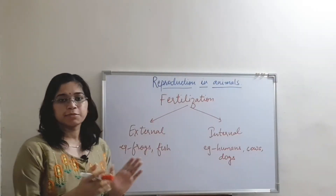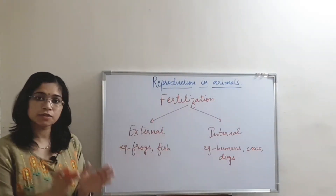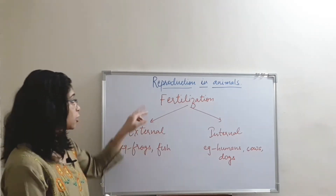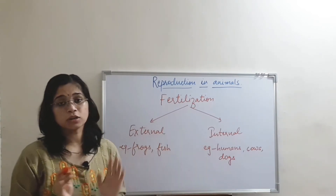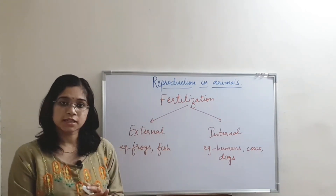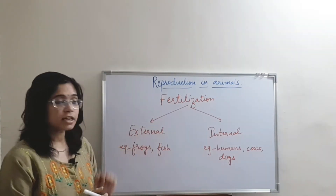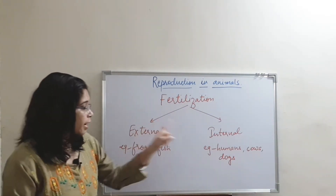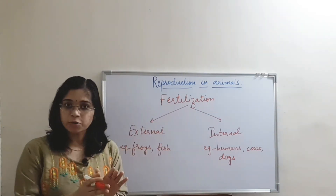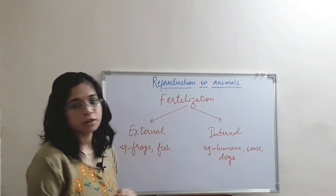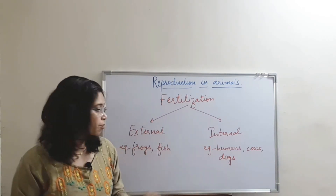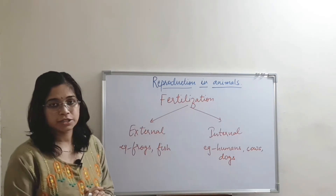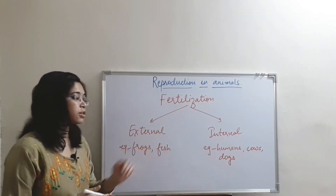Fertilization is the fusion of male and female gametes to form a structure known as zygote. This is of two types — external and internal — based on where the fertilization takes place. If it takes place outside the body of the female, it is known as external fertilization. If it takes place inside the female body, it is known as internal fertilization. In humans, cows, and dogs, internal fertilization is seen. In frogs and fish, external fertilization takes place — they lay eggs in water.